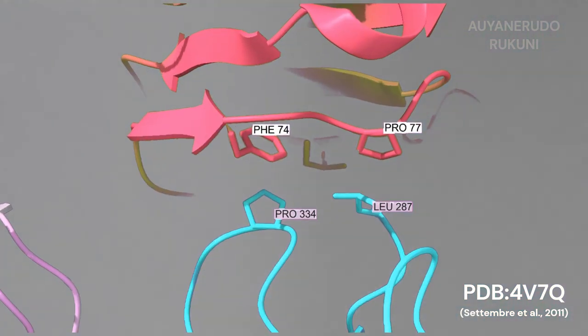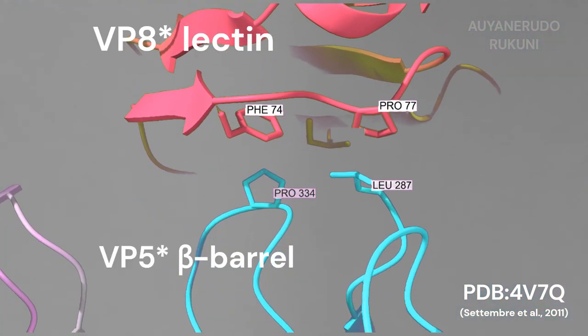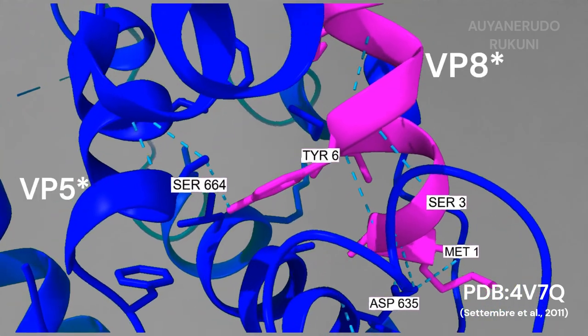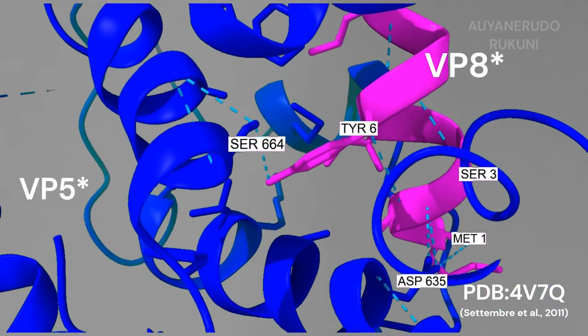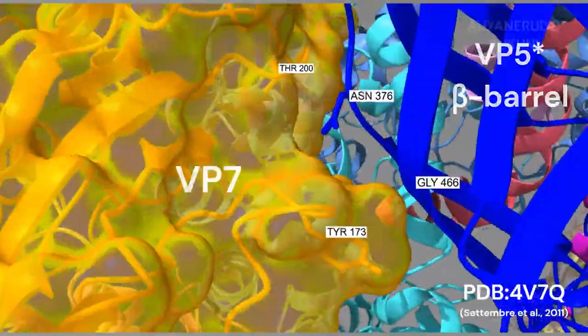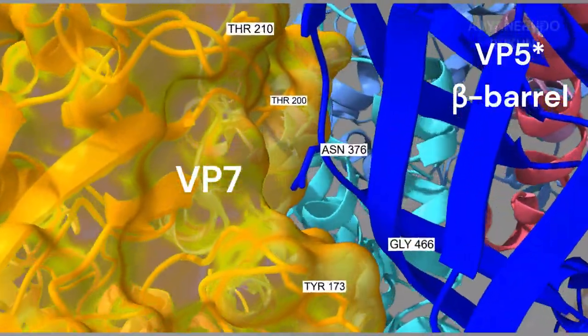Within VP4, interactions occur between the hydrophobic loops of the VP5 beta-barrel and the VP8 lectin domain, as well as the VP5 C-terminal domain with the VP8 N-terminal helix. Molecular interactions between VP5 and the VP7 loops dictate the orientation of spike projection and spike asymmetry.